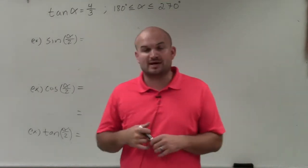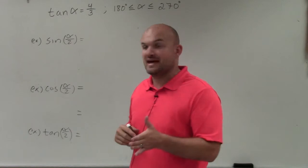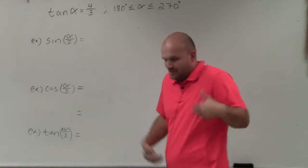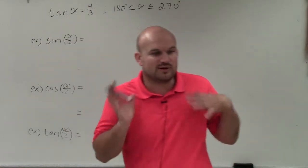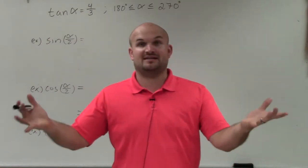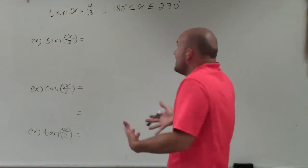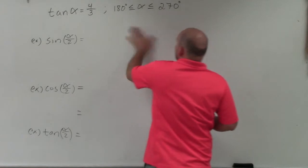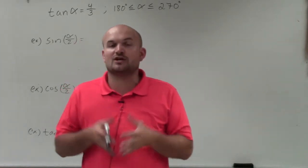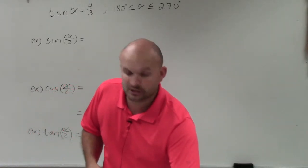What we want to do is identify the half angle for sine, cosine, or tangent of that half angle. The important thing is we're not given a value like before — an actual angle in radians or degrees. We're not given a triangle either. We're given an equation and a constraint, and those are going to allow us to create our triangle.